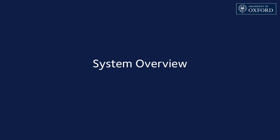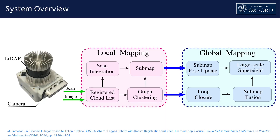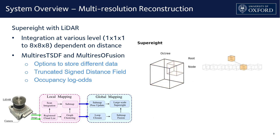To explain the design of our system, I would like to start with an overview of its architecture. Our reconstruction pipeline consists of two major components, namely local and global mapping. The registered cloud list is the input of the proposed pipeline provided by an external SLAM system. It includes information such as LiDAR scans and the SLAM pose graph. Local mapping creates local submaps by integrating new scans. Global mapping handles submap fusion and maintains consistency in the large-scale map. Both local and global mapping rely on the core reconstruction framework, Super8.